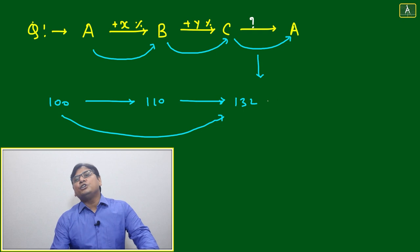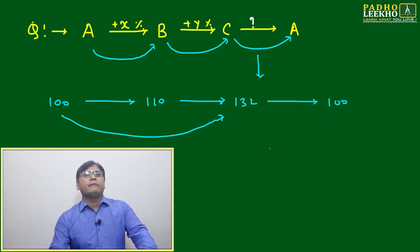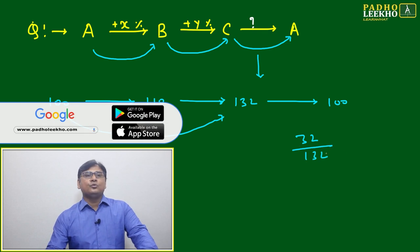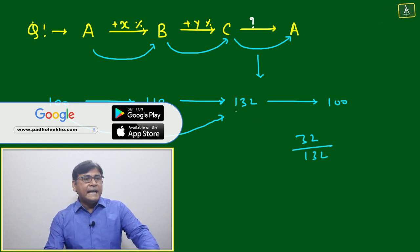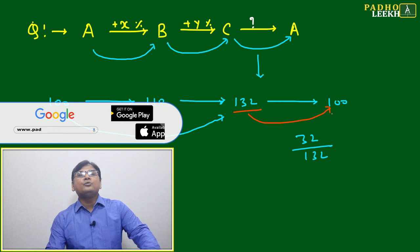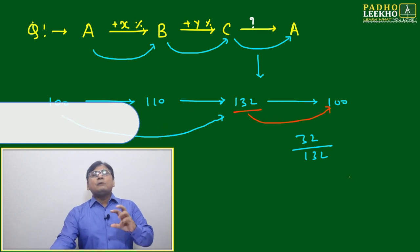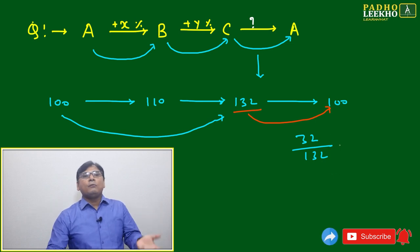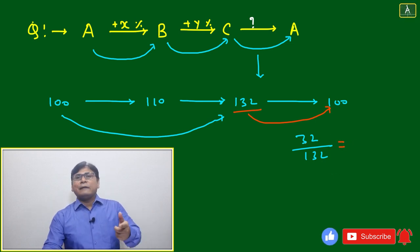Means now 100 has changed to 132. Now 132 we have to bring back to 100. What will be the change? Change will be 32 out of 132, not 100, because now base will become 132. You have to decrease by 32 out of 132.